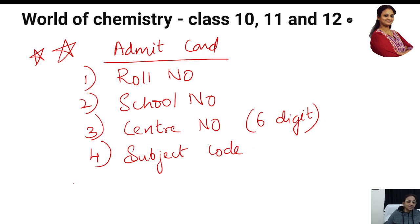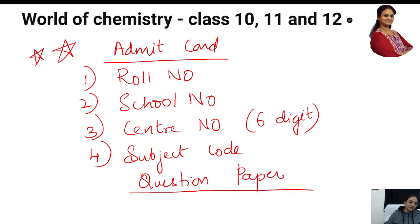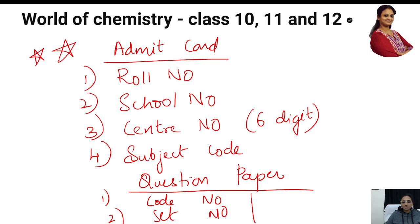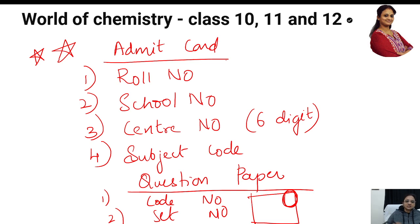After that, in the question paper you receive, whatever subject you are writing, that question paper has two different things: a code number and a set number. On the right-hand extreme side of the question paper, you will have your code number and set number. Any doubts, ask me in the comment section.